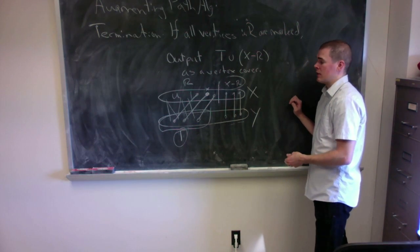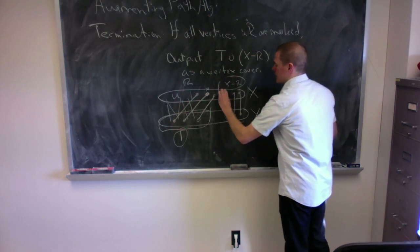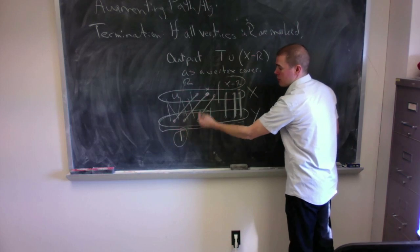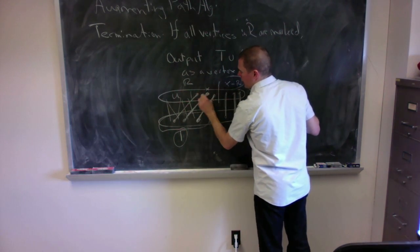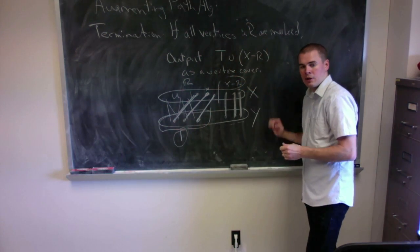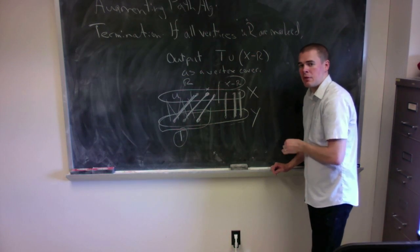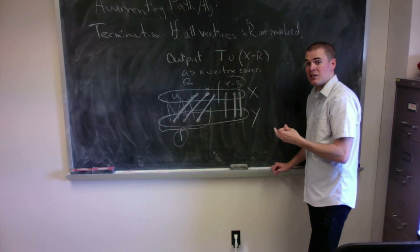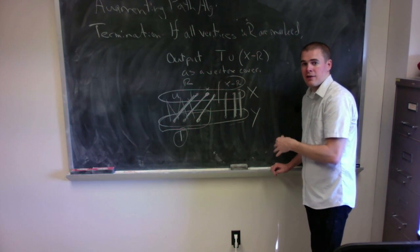It will be a minimum vertex cover because its size equals my matching. The vertices of X minus R all have matched edges, and they are not matched to things in T. Everything in T is matched, because if something in T were unmatched, I would have output an augmenting path. So I have a vertex cover whose size equals my matching in this termination condition. Next, we're going to see an example of how to perform this algorithm given a specific bipartite graph and a matching.